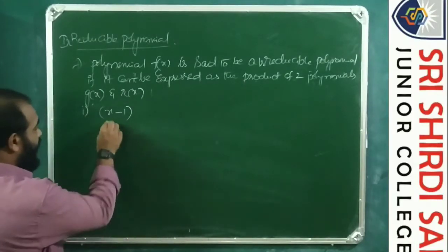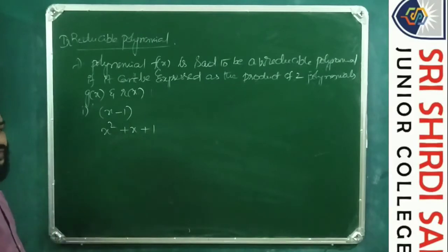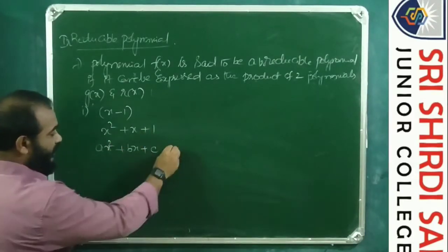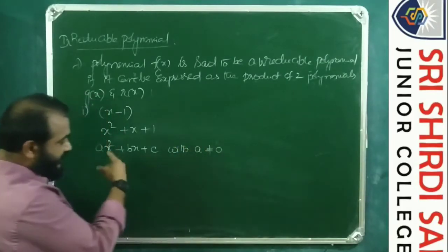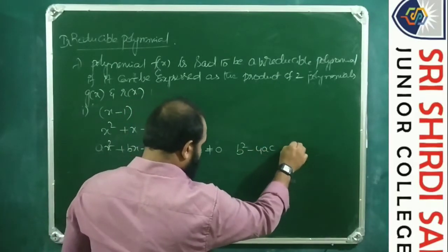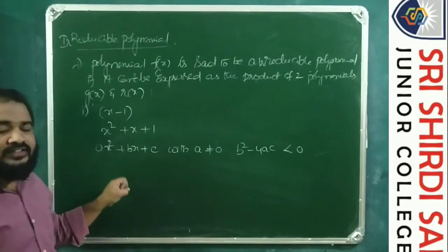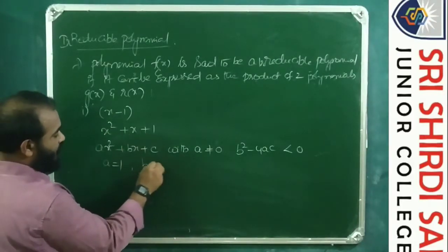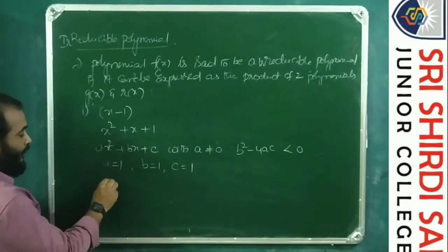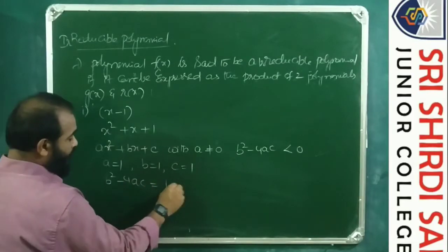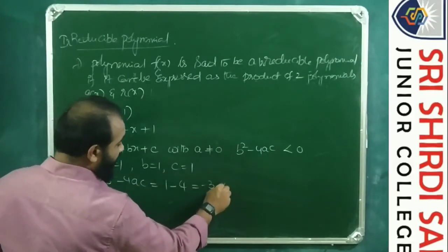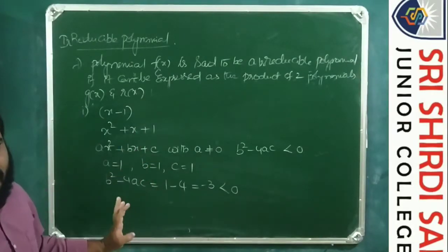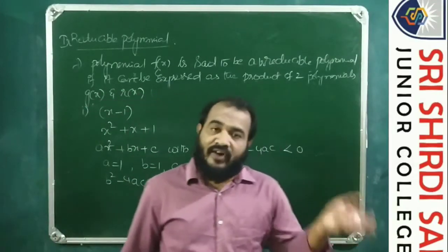Consider x²+x+1. This is of the form ax²+bx+c with a≠0. Its discriminant b²−4ac — here a=1, b=1, c=1 — gives 1²−4(1)(1) = 1−4 = −3, which is less than 0. Therefore we conclude that x²+x+1 is an irreducible polynomial. So we have discussed types 1 and 2; in this class we will discuss types 3 and 4.